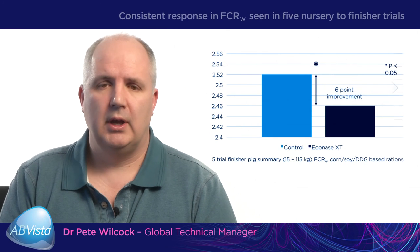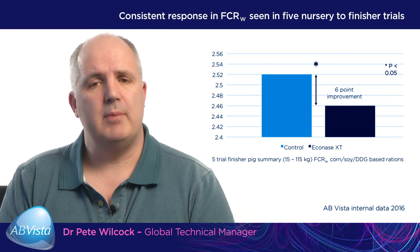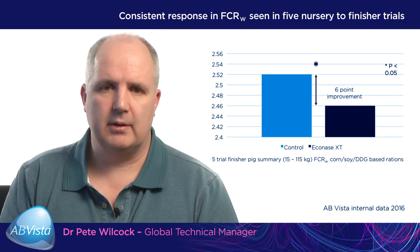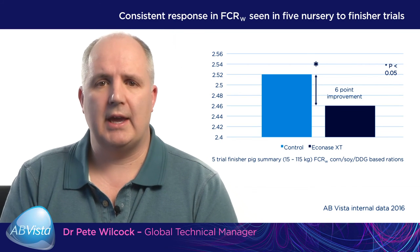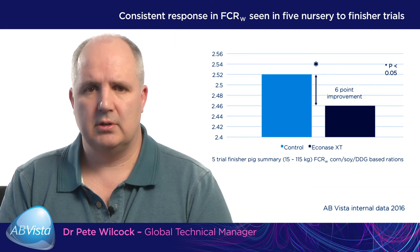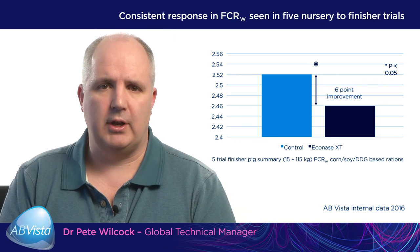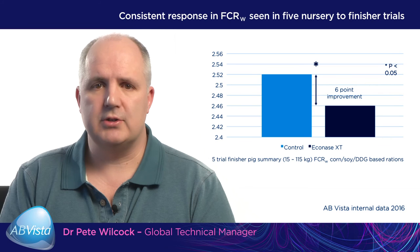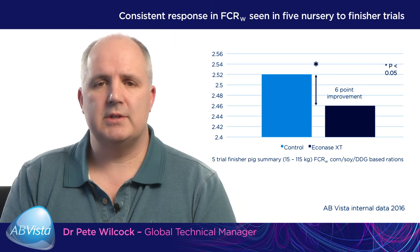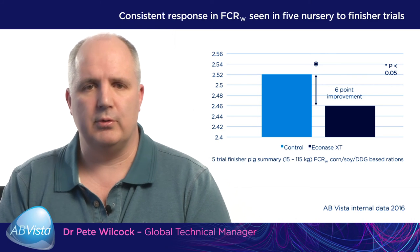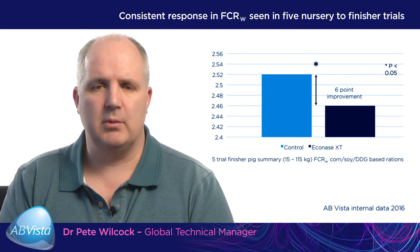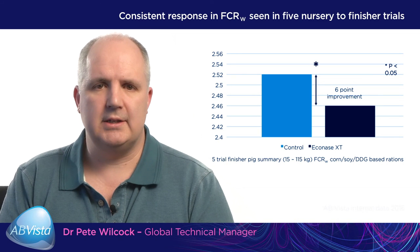The previous study showed that adding xylanase in the nursery improves overall feed conversion, with the bigger response being in the late finisher pig. A five-trial summary in the US based on corn-soy distiller rations, where xylanase was added during the nursery period, showed a six-point improvement with xylanase addition. This six-point improvement is worth approximately $1.80 to $2.10 per pig in a US production system.